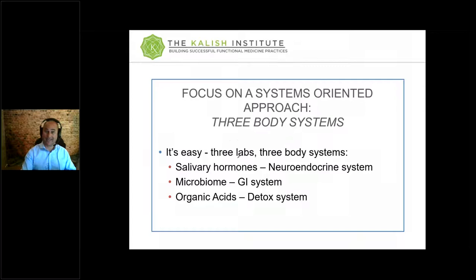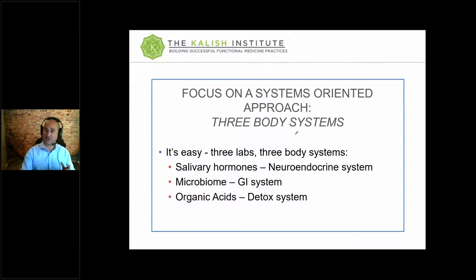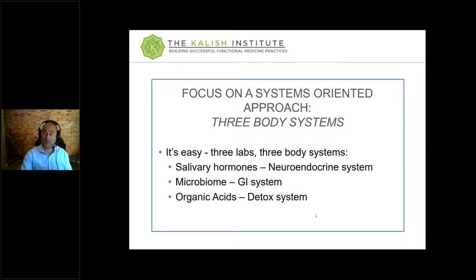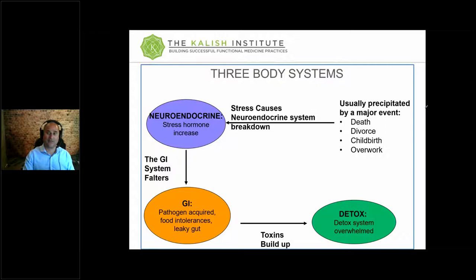In the mentorship, we do three tests: salivary hormones, GI microbiome, and organic acids. That covers so many things. It's like the regular series of labs a doctor runs at your annual checkup. You're not trying to come up with an entirely new clinical model for every patient — you have a clear clinical model based on these three body systems. The basic concept is that we have a description of why people get sick, how they get better, and what labs should be ordered, all unified in a way that makes sense.